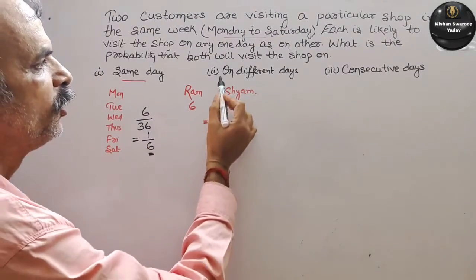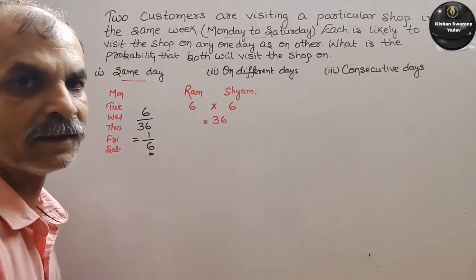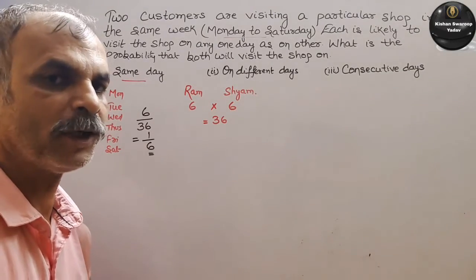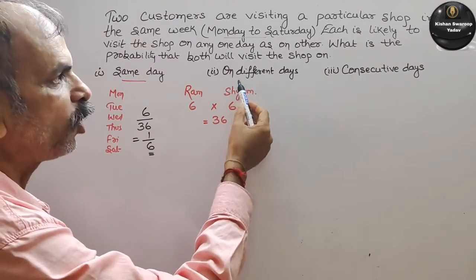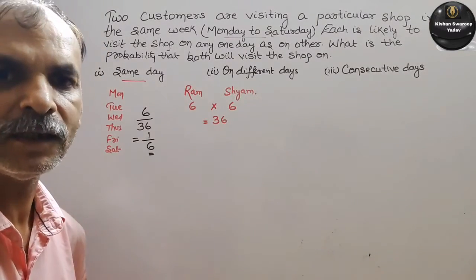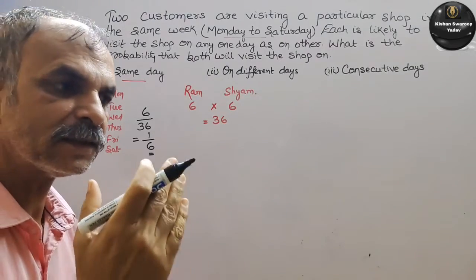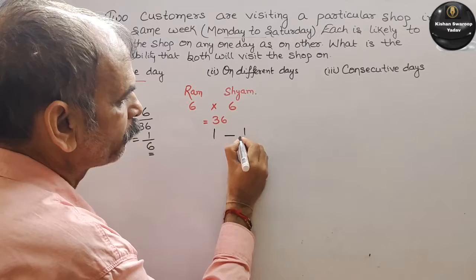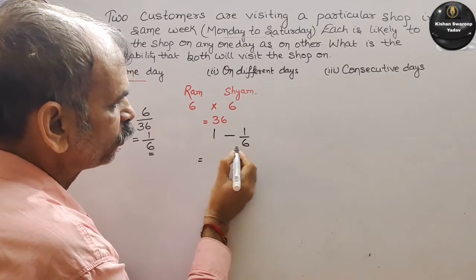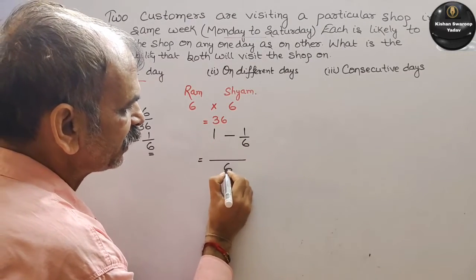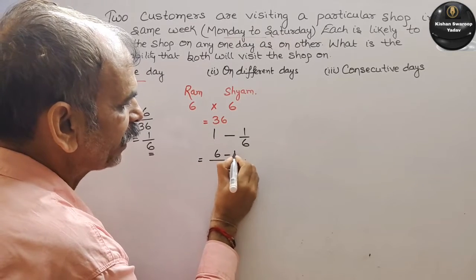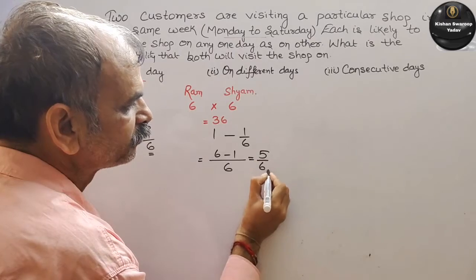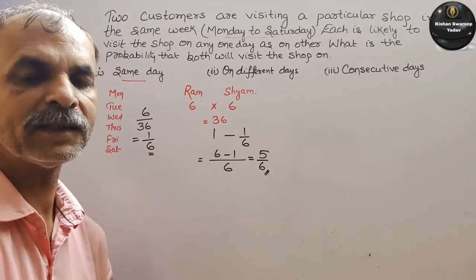अब next देखो: on different days — अलग-अलग दिन में जाएंगे. तो probability क्या होगी? Same day की probability one by six है, तो on different days की probability होगी one minus one by six. That is equal to six minus one by six, that is equal to five by six. तो second probability is five by six.